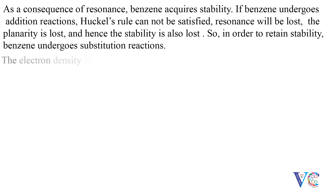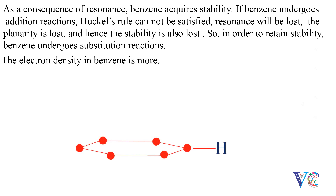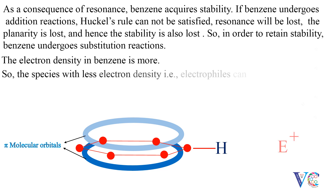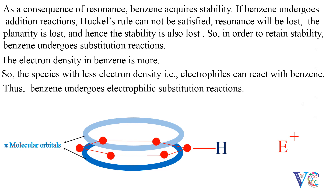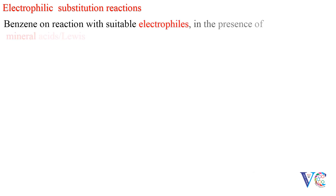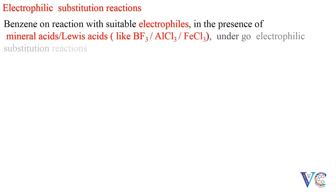The electron density in benzene is more. So, the species with less electron density, that is electrophiles, can react with benzene. Thus, benzene undergoes electrophilic substitution reactions. Benzene, on reaction with suitable electrophiles in the presence of mineral acids or Lewis acids like BF3, AlCl3, or FeCl3, undergoes electrophilic substitution reactions.